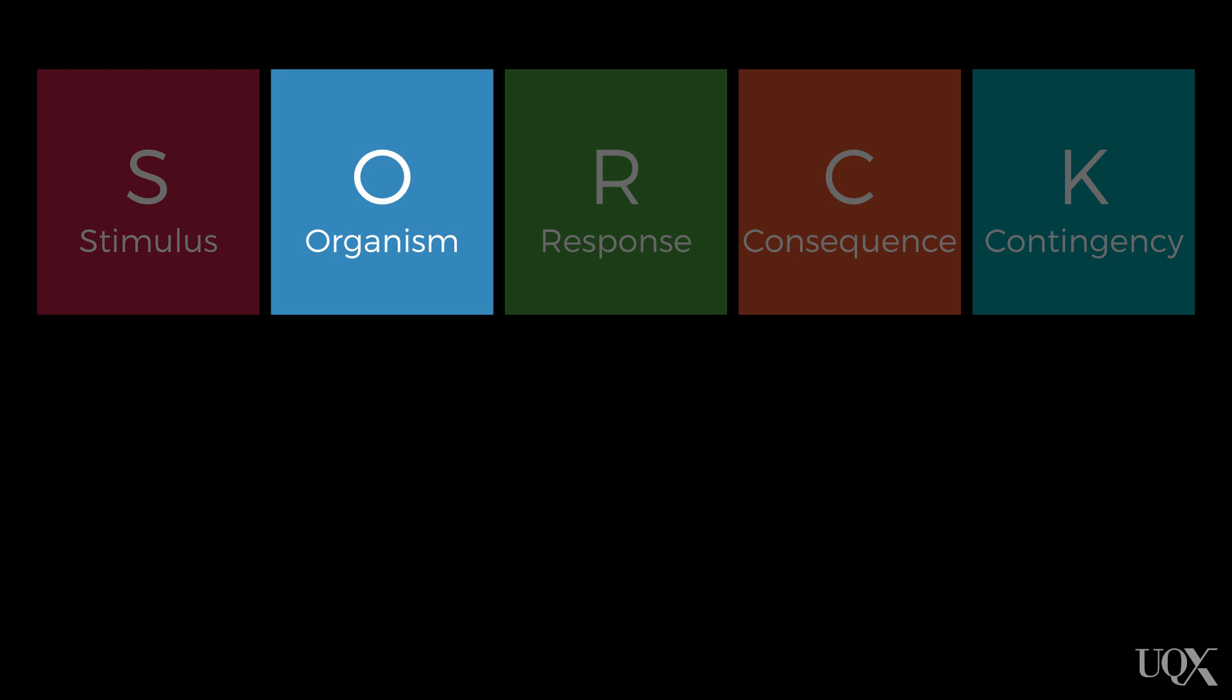The second column refers to the organismic variables. These are variables that influence the relationship between the antecedent stimuli and the response, and that are characteristic of the current state of the individual.